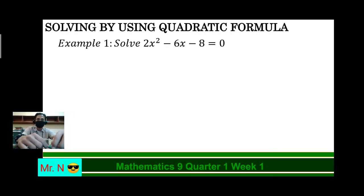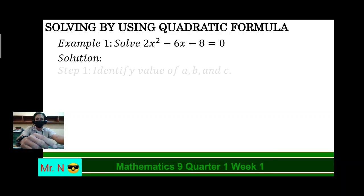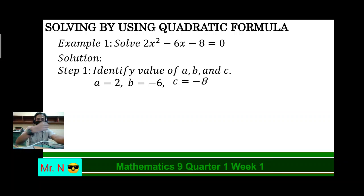Let's have example number one. Solve 2x² minus 6x minus 8 equals 0. Using the quadratic formula, we're going to identify first what are the values of A, B, and C. That's step number one. So, the value of A is 2, the value of B is negative 6, and the value of C is negative 8.